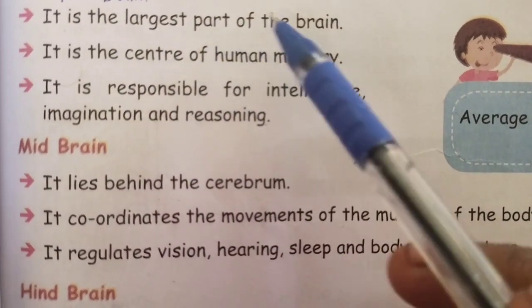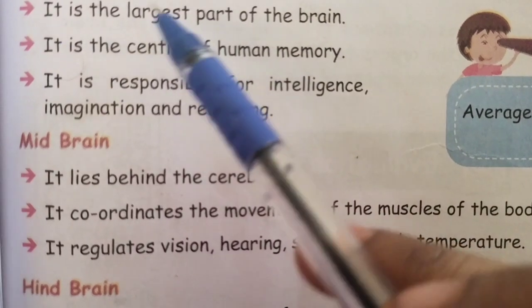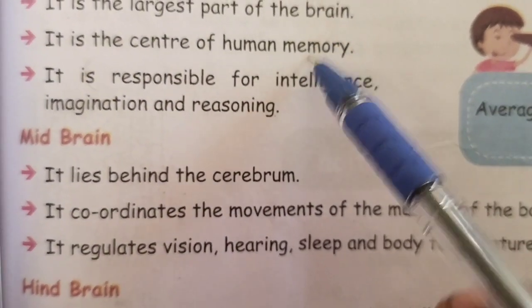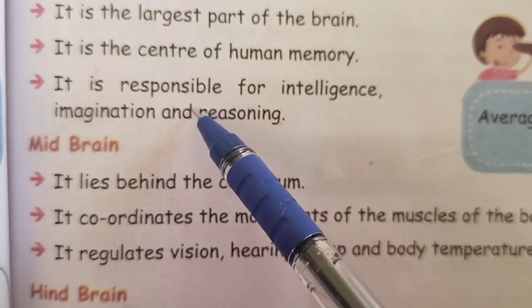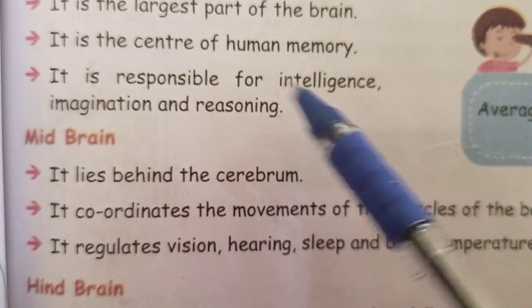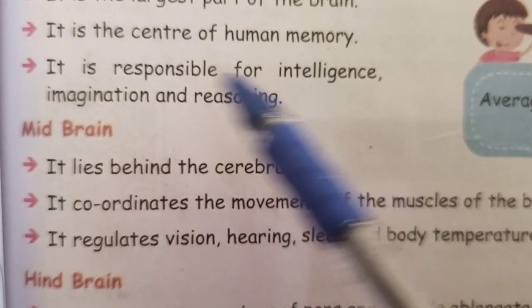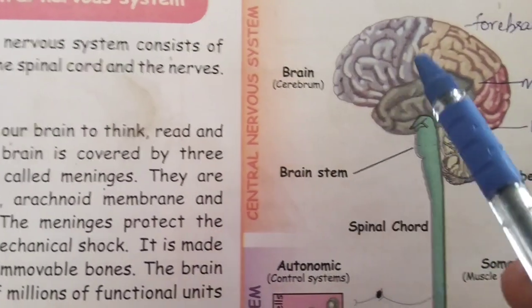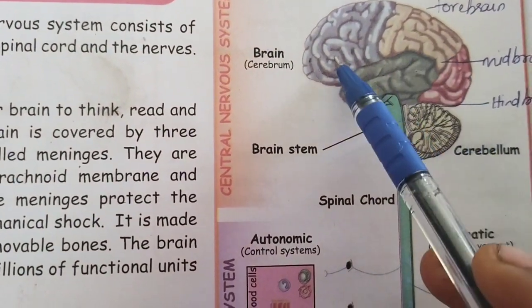The forebrain is the largest part of the brain and covers a large area. It is the center of human memory — all our memories are stored in the forebrain. It is also responsible for our intelligence, imagination power and reasoning power.